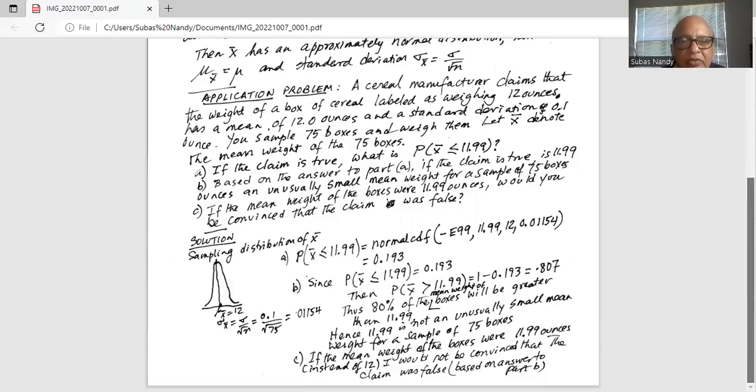Part B, based on the answer to part A, if the claim is true, is 11.99 ounces an unusually small mean weight for a sample of 75 boxes.